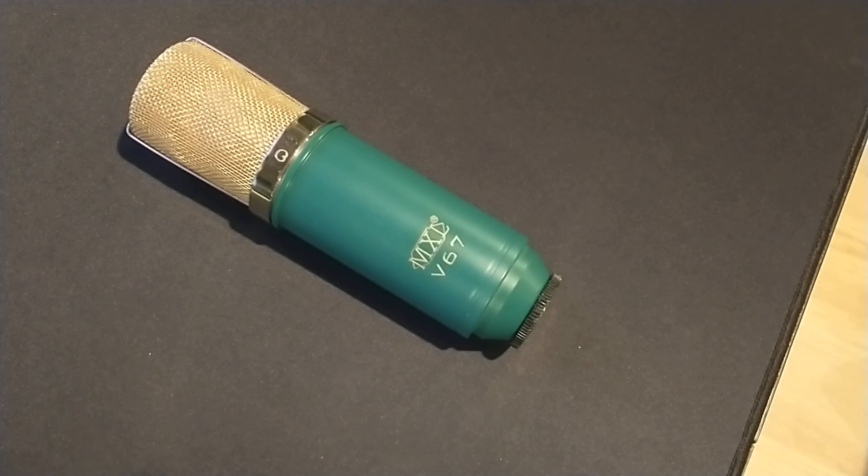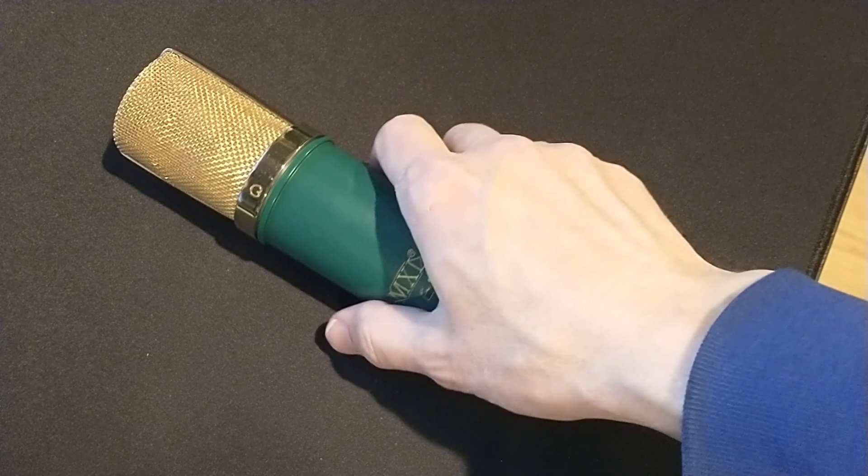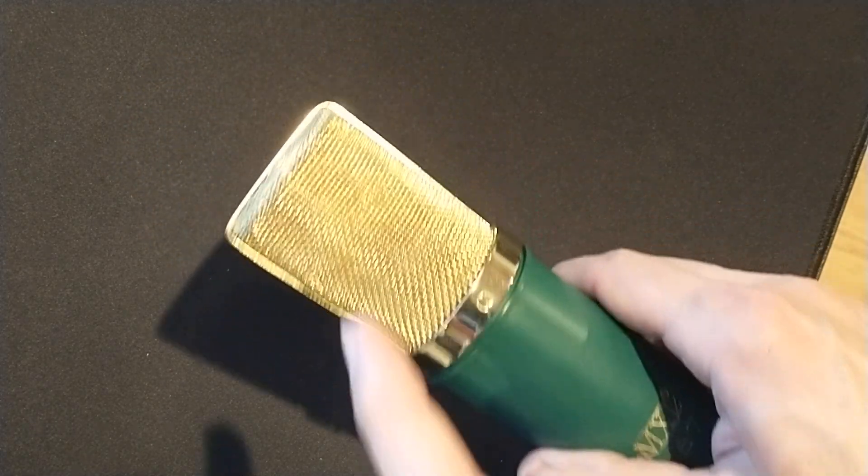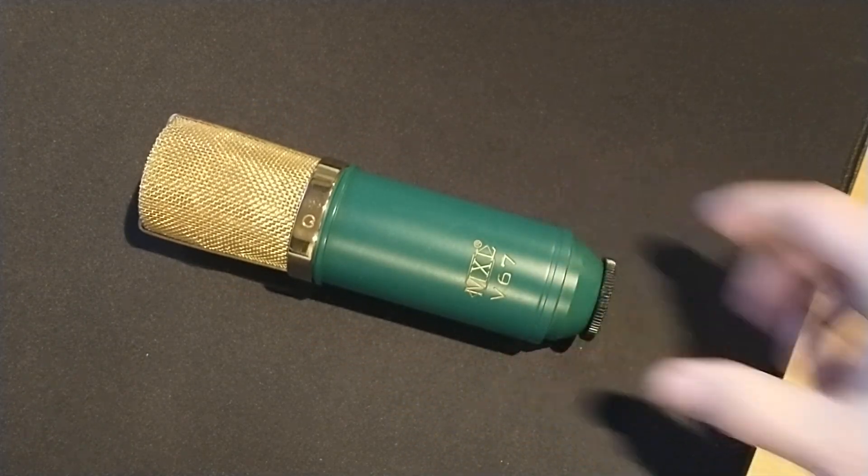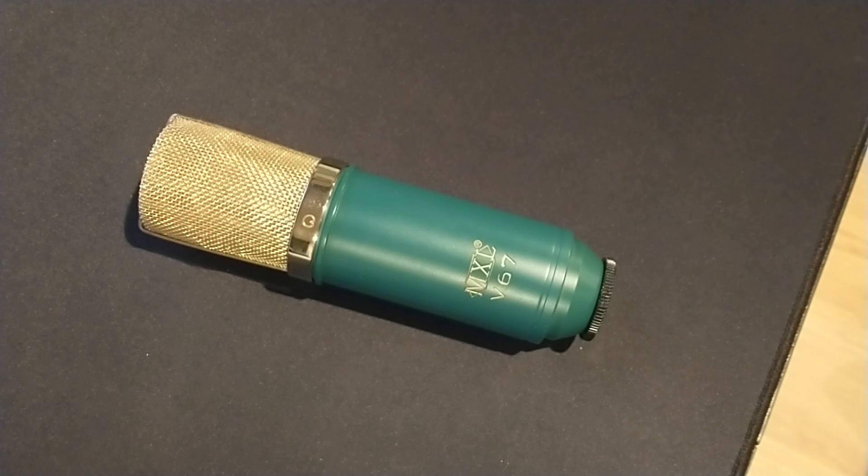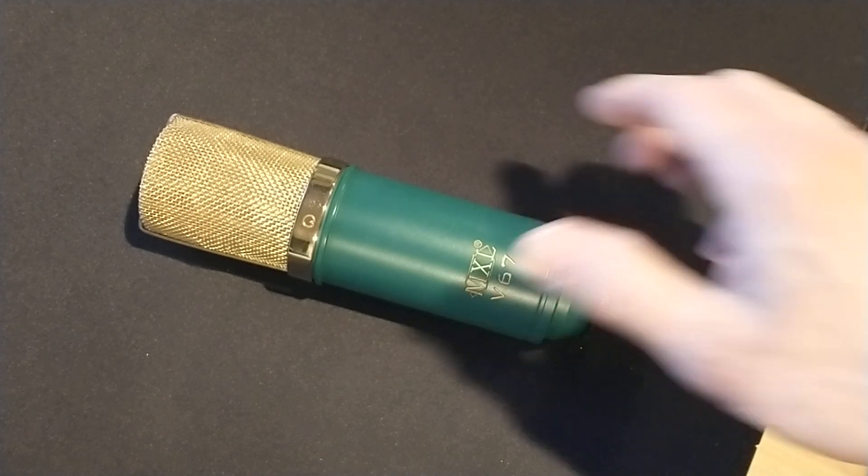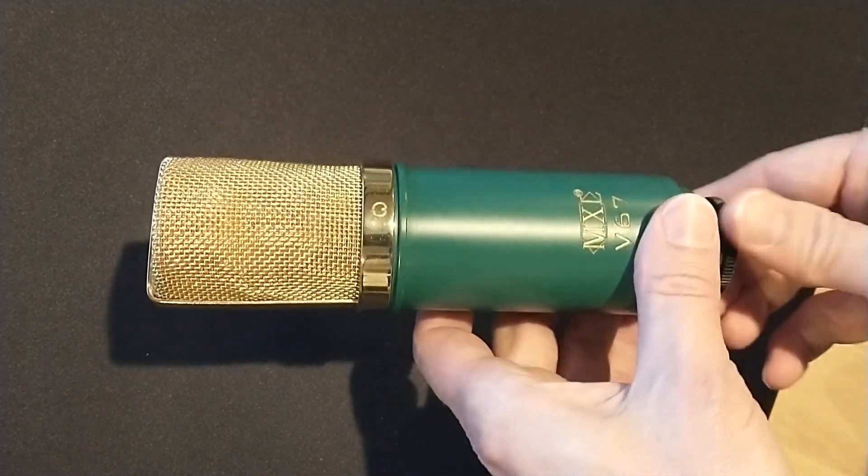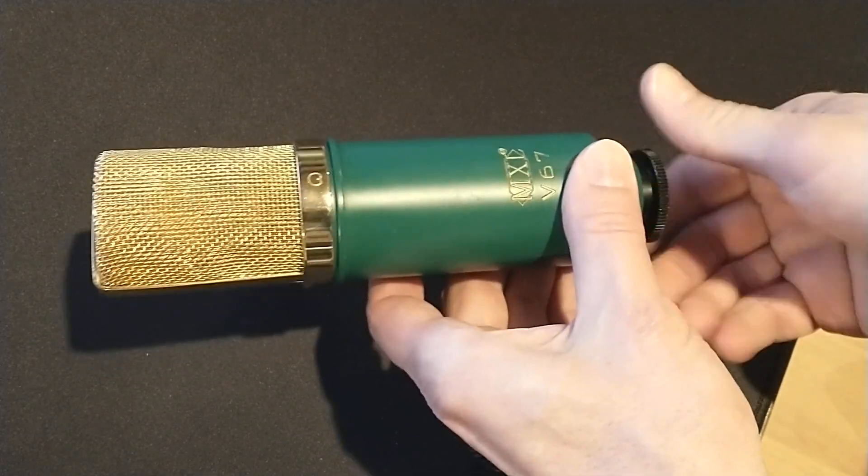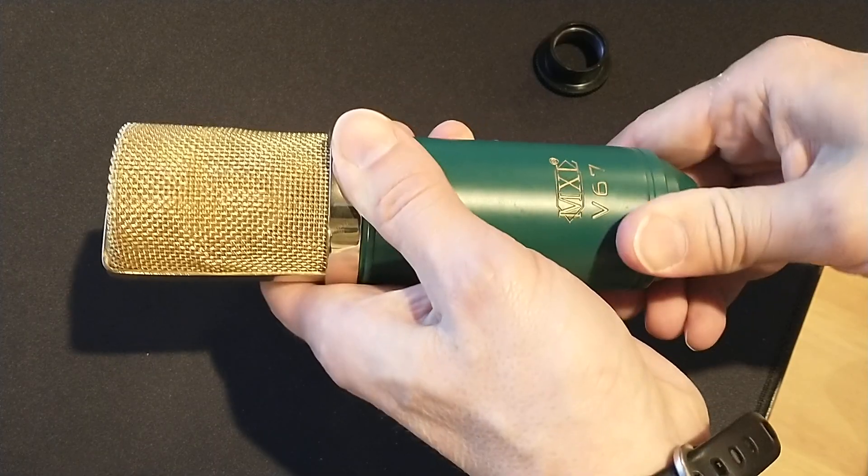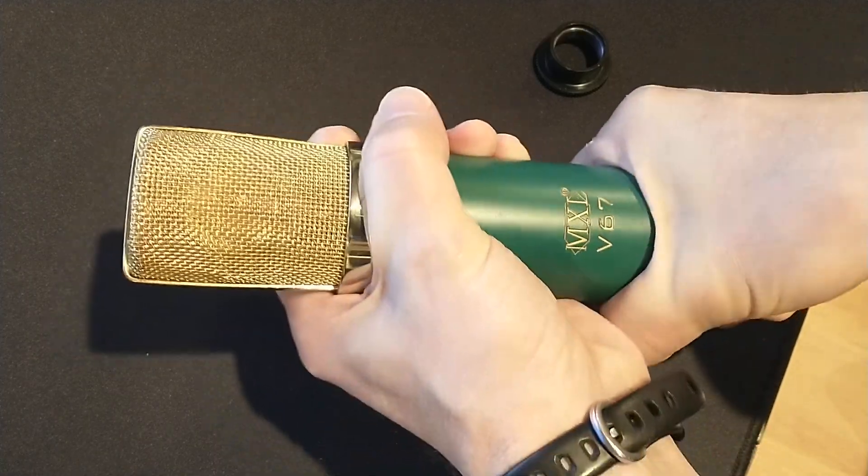Okay, so today we've got an MXL V67G that I bought used, and I found that when I would handle the mic, I can feel the capsule kind of flopping around in there. So the capsule's loose. I'm just going to show how to tighten up the screw that holds the saddle or the capsule mount in order to tighten that up so that the capsule isn't loose. So first, we're going to start just by removing the ring here at the bottom and then unscrewing the bottom of the mic's body.